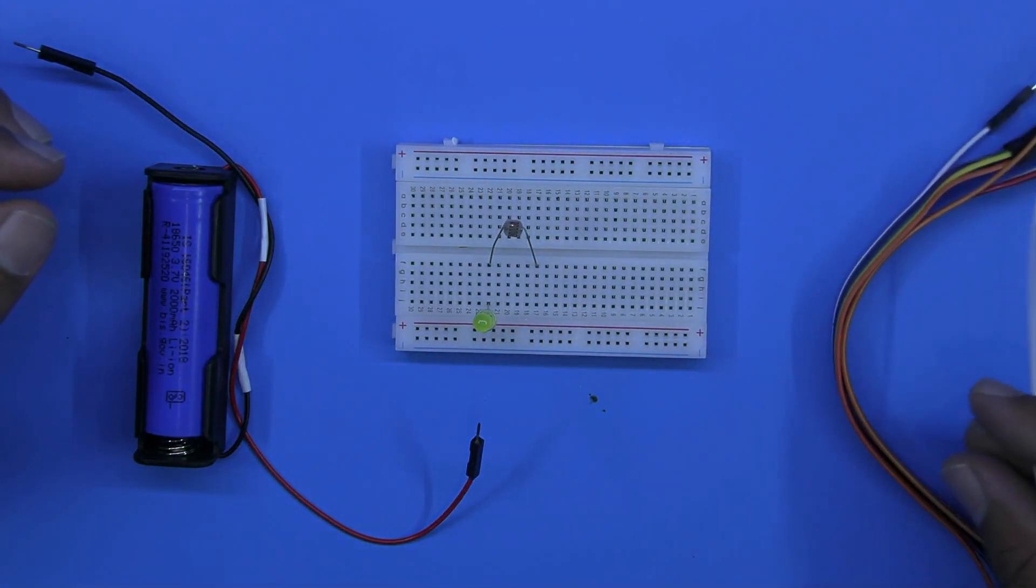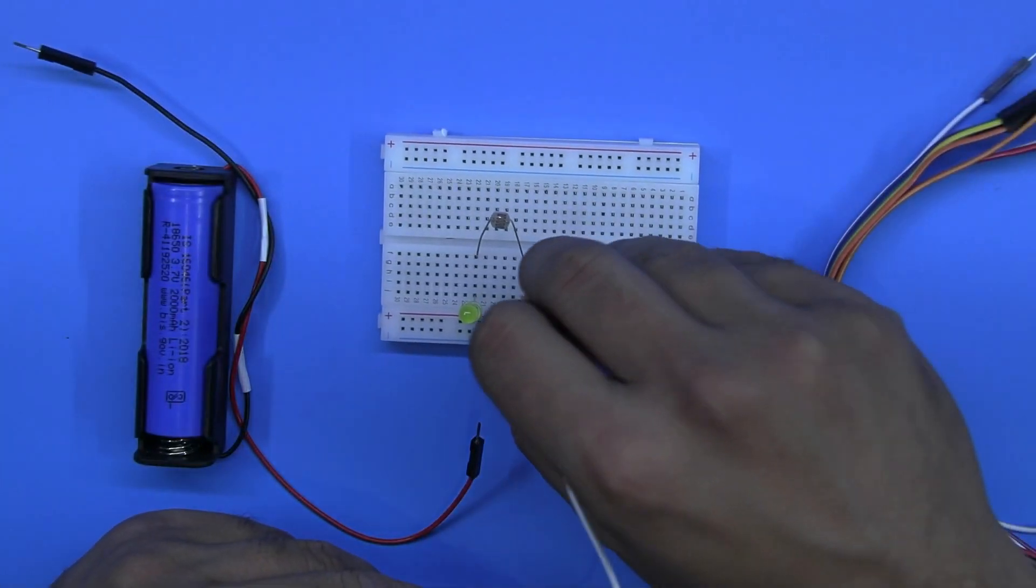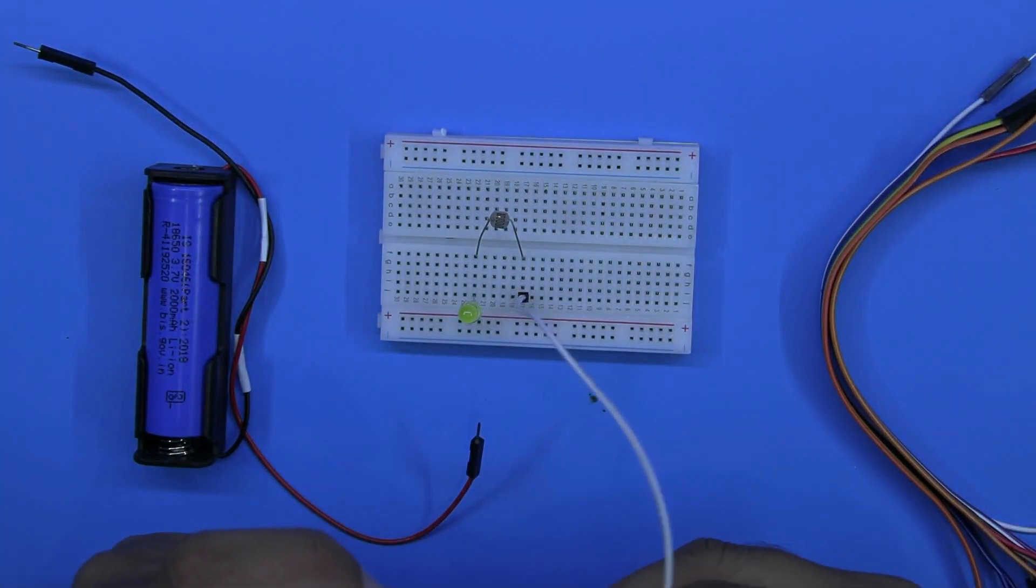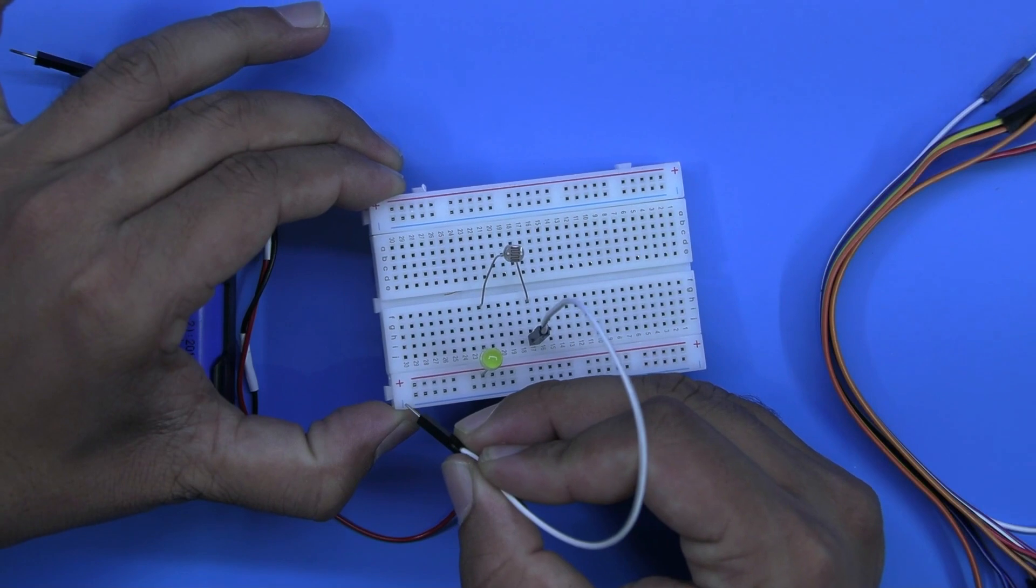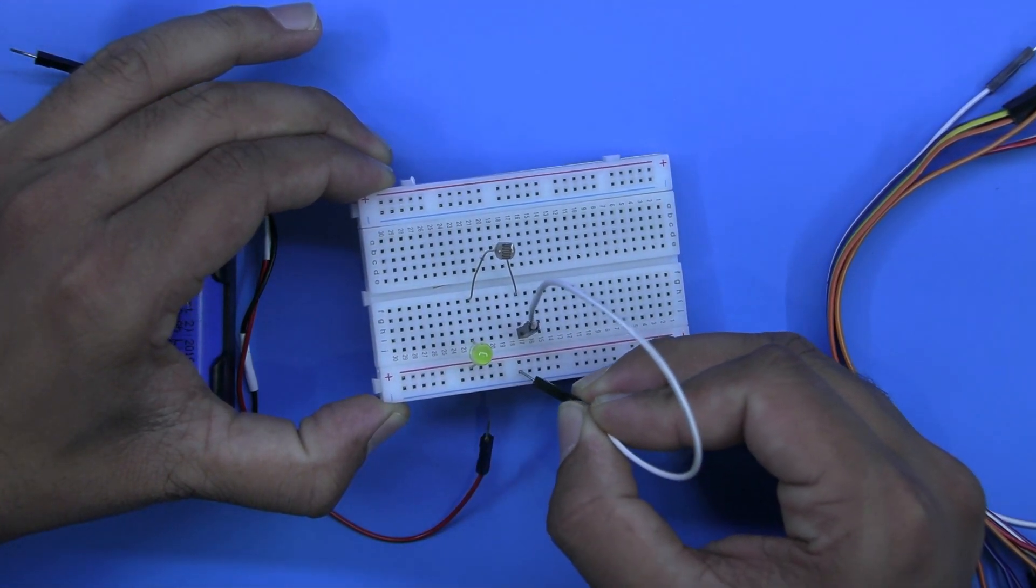Let's power our circuit. Connect the battery positive terminal to the LED positive terminal and negative to LDR sensor negative terminal.